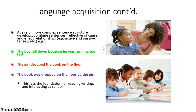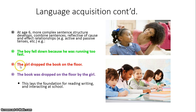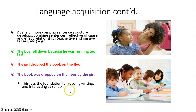By age six, children can use complex or combined sentences, show cause and effect relationships, and use active and passive tenses — all developed through interaction with parents and peers. For example, 'The boy fell because he was running too fast' shows cause and effect. 'The girl dropped the book on the floor' can be reversed to 'The book was dropped on the floor by the girl' — the first being active and the second passive. When children develop these skills by age six, we can see their foundation for reading and writing is intact and they are ready for school.